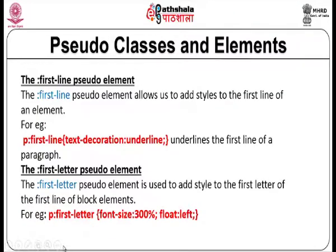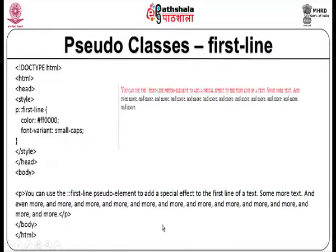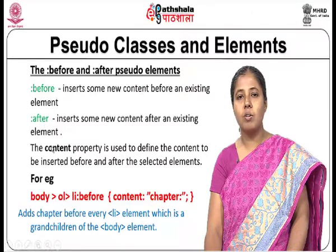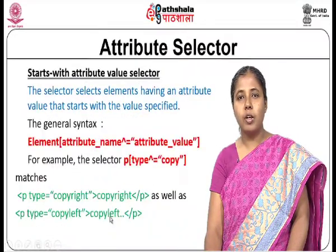There is a first-line pseudo element that adds styles to the first line of an element — for example, the first line of a paragraph tag gets that style. Similarly, first-letter applies style to the first letter of the first line of a paragraph tag. There are also before and after pseudo elements, and attribute selectors.